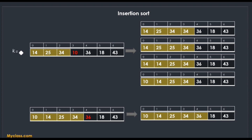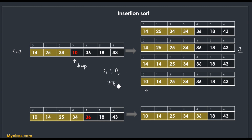When k = 3, temp = 10. We compare 10 with 34, then 25, then 14 — up to three comparisons. We shift 34, then 25, then 14. After decrementing ptr to −1, the correct position is a[ptr + 1] = a[0], so 10 is placed at index 0. The inner loop works a maximum of three times here.